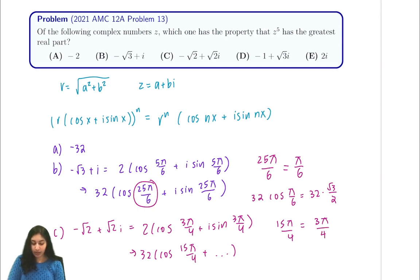Sorry, that is incorrect. It should be 7π over 4. So our answer for this part, the real part is equal to 32 times cosine of 7π over 4.